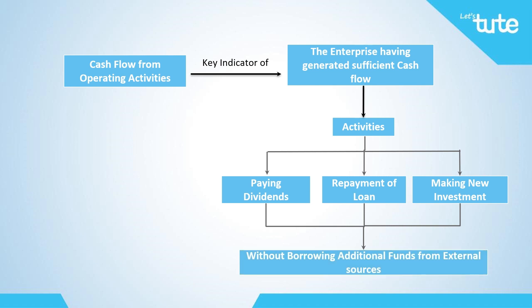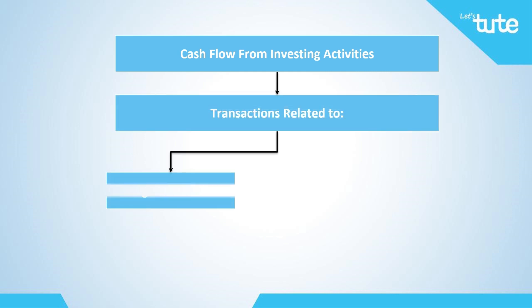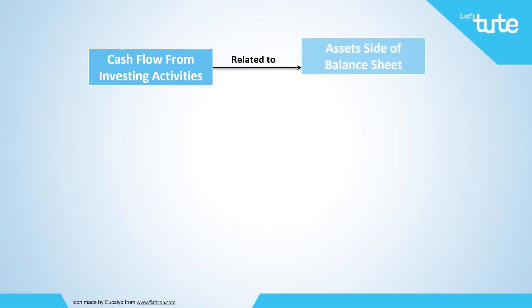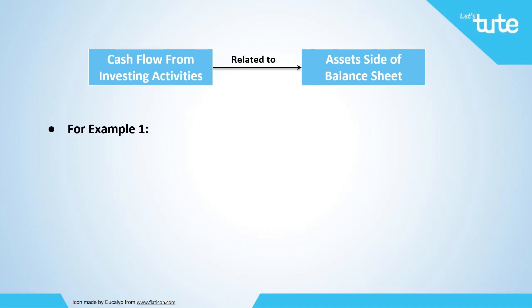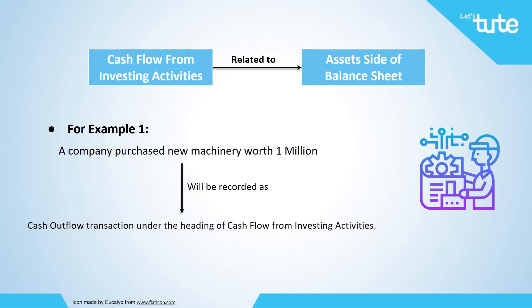Now let's understand the second activity within the cash flow statement, which is cash flow from investing activities. Under investing activities, transactions related to the acquisition and disposal of long-term assets and other investments — which are not included in cash equivalents — are to be shown. In simple terms, cash transactions related to the asset side of the balance sheet are shown here. For example, a company purchased new machinery worth 1 million. This transaction will be recorded as a cash outflow under the heading of cash flow from investing activities, because it involves expenditure made towards acquiring a fixed asset.